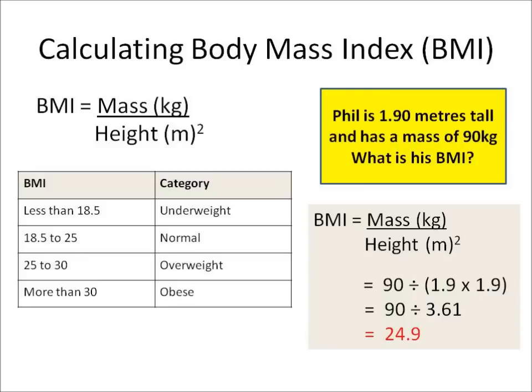So you need to be able to calculate body mass index, BMI. The BMI of somebody tells us or can help us work out whether they're underweight, normal weight, overweight or obese. So let's have a look at the calculation. Body mass index equals the mass of somebody divided by their height squared.